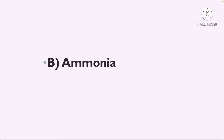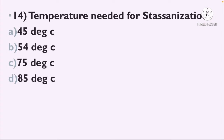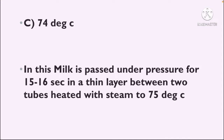Next question: Temperature needed for Stassenization — Option A: 45°C, Option B: 54°C, Option C: 75°C, Option D: 85°C. The correct answer is Option C, 75°C — not 74°C, but 75°C. In this method, milk is passed under pressure for 15 to 16 seconds in a thin layer between two tubes heated with steam to 75°C.